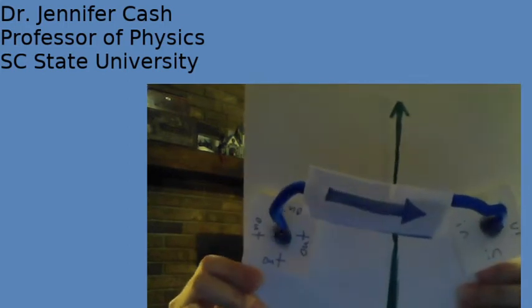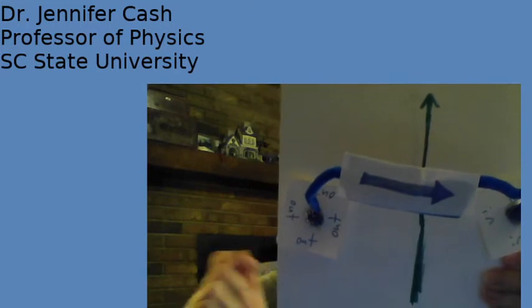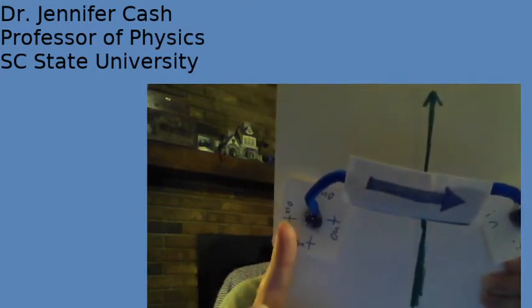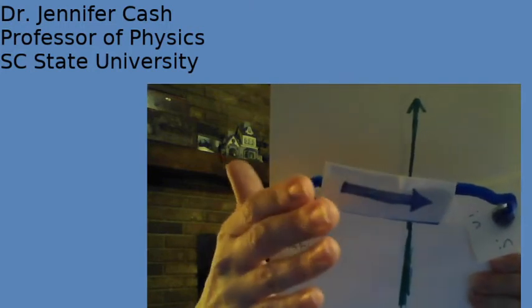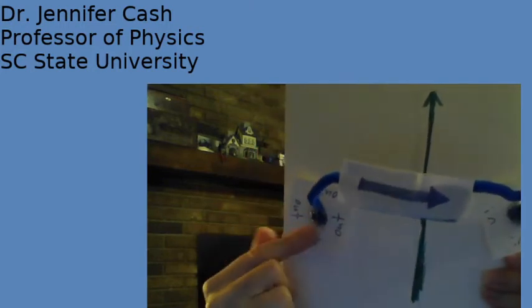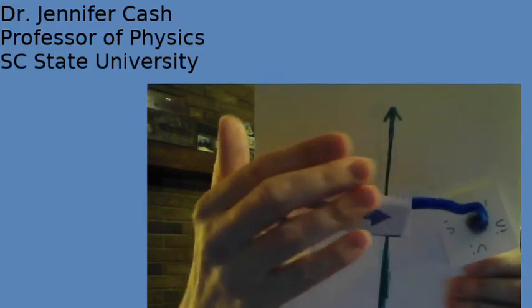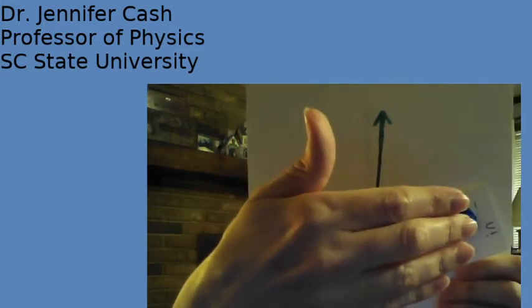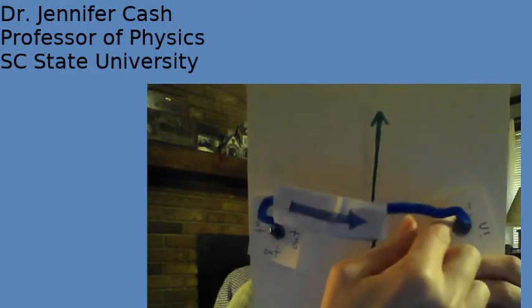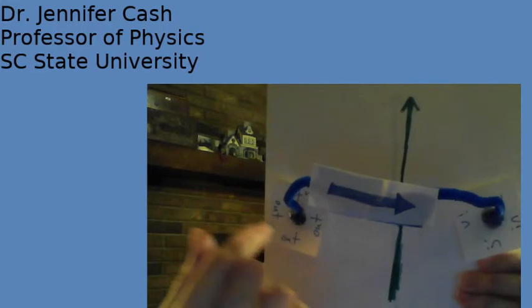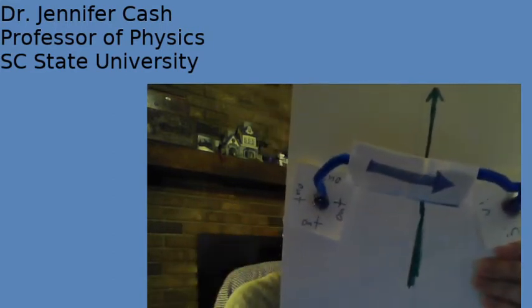So for the one that you guys had on Friday, where the current was going up towards the top of the paper, what we see is the magnetic field comes out on this side, which for you guys that would be the left side of the wire, and then goes across towards the right in front of it, and then it comes back in over here on the right side. So as you look at the wire, it comes out on one side, wraps around, and goes in on the other side.